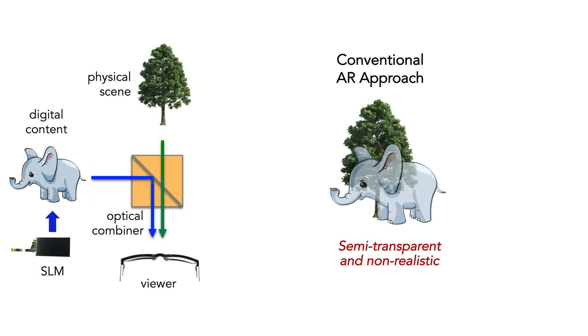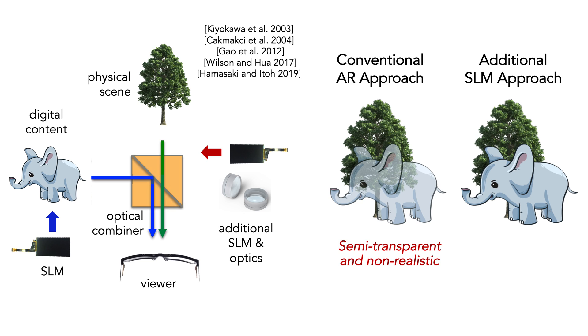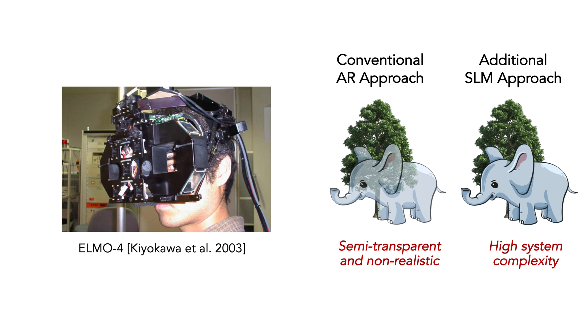Many previous works, initially by Kiyokawa et al., and most recently by Hamasaki and Ito, has demonstrated occlusion capability using an additional SLM for pixel-by-pixel blocking of the physical scene. However, as seen by the ELMO 4 system developed by Kiyokawa et al., this comes with the cost of increasing the complexity of optical and electronic systems, and hence form factor, power requirements, and need for robust alignment and calibration.